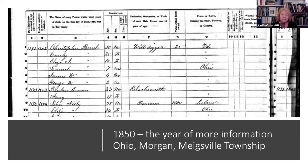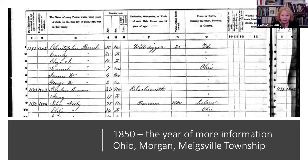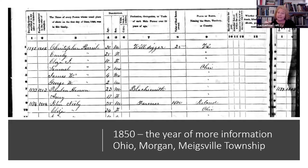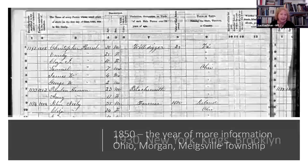You also need to look at every other column — column 10, married within the year; column 11, whether they attended school; column 13, whether deaf, dumb, blind, or sane. When you look at a document, look at the whole document. We might be focused on placing the family in a place and time, but there are other questions hidden in those columns. If the question is when did Emily and Christopher get married, there's no hash mark in column 10, so they did not marry within the year — they probably married before 1840, since their first child is 10 years old.